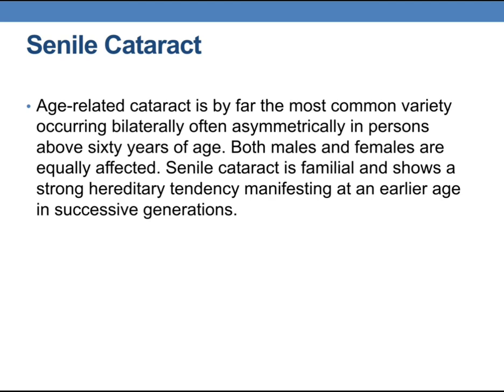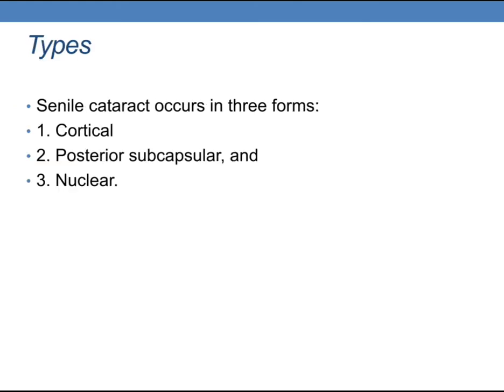In this lecture, I would like to focus more on senile cataracts as they are so common. Age-related cataract is by far the most common variety, occurring bilaterally — often asymmetrically — in persons above 60 years of age, with both males and females equally affected. Senile cataract is familial and shows a strong hereditary tendency, manifesting at an early age in successive generations. Senile cataract occurs in three forms: cortical, posterior subcapsular, and nuclear.